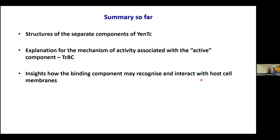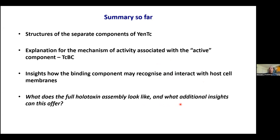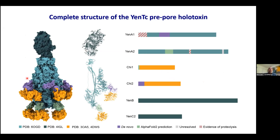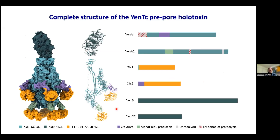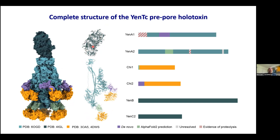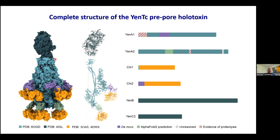What's missing from this picture is what the full holotoxin assembly looks like, and what additional insights that might offer into function. This is the structure solved more recently of the holotoxin assembly. You can see the NBC complex sitting very nicely on top of the TCA assembly, which includes the chitinases shown in orange. The TCA assembly is present in five-fold symmetry — five copies of the TCA protomer — with only a single copy of the NBC complex, creating a symmetry break at the interface between the TCBC and TCA components.